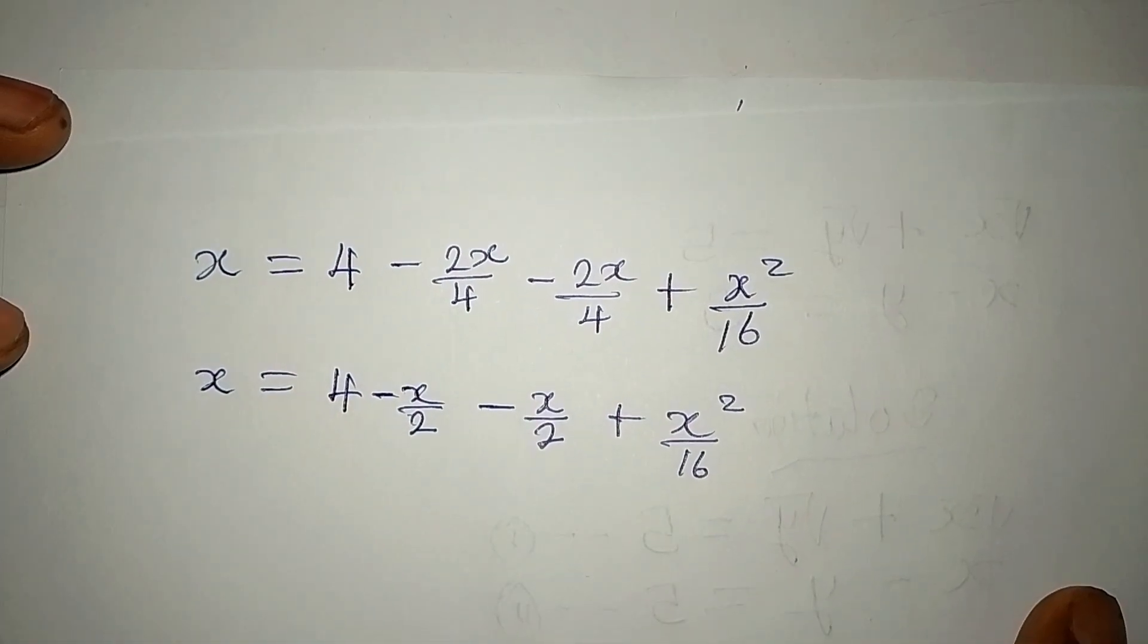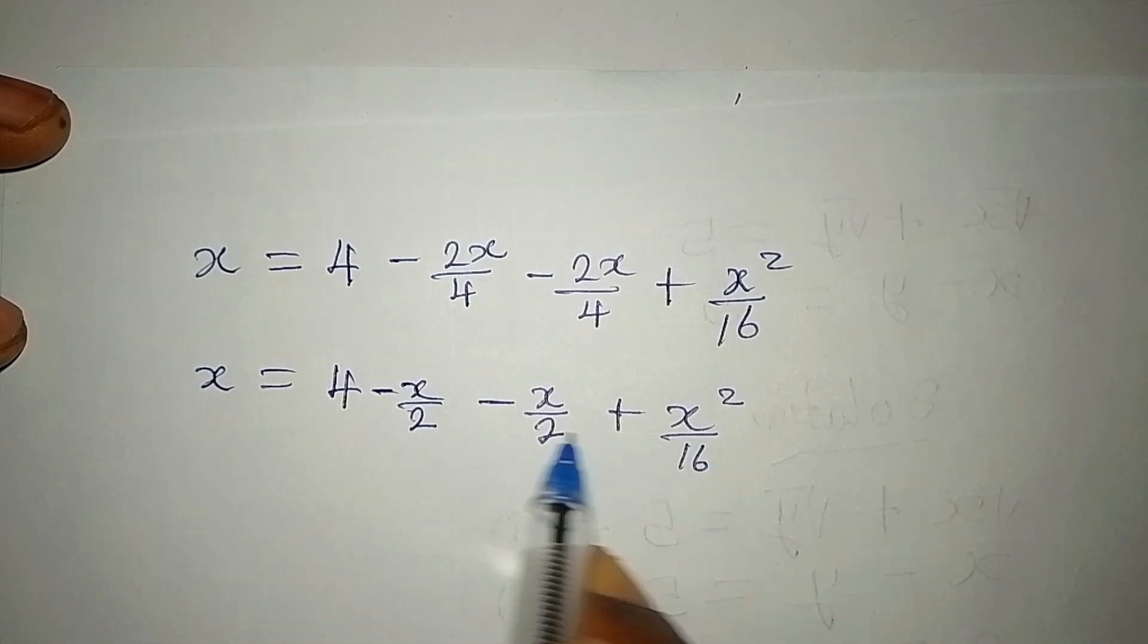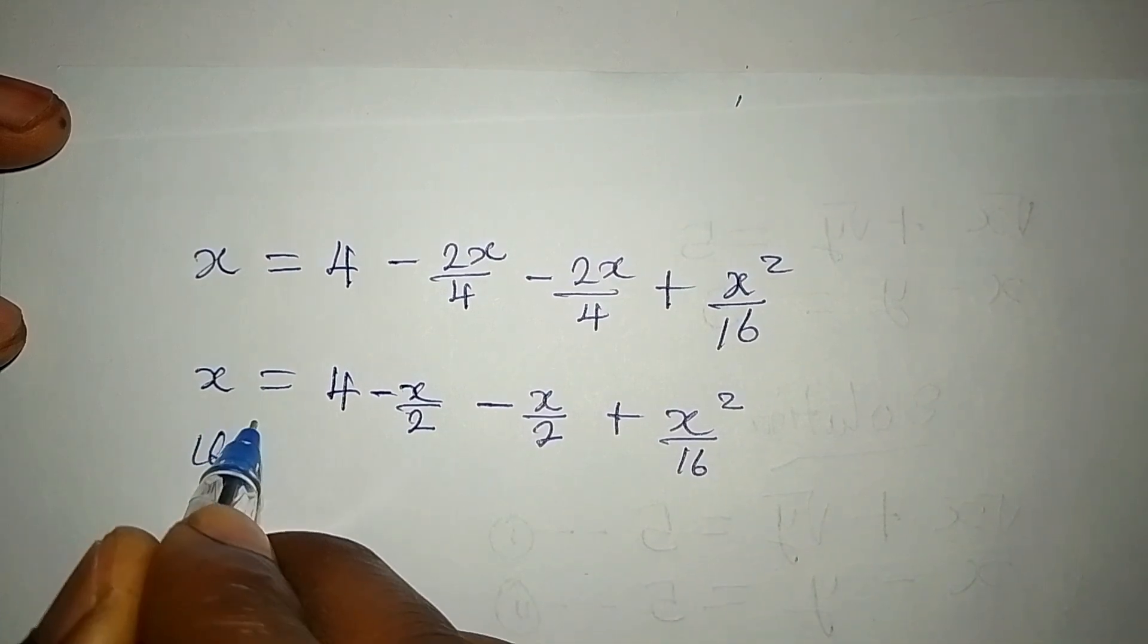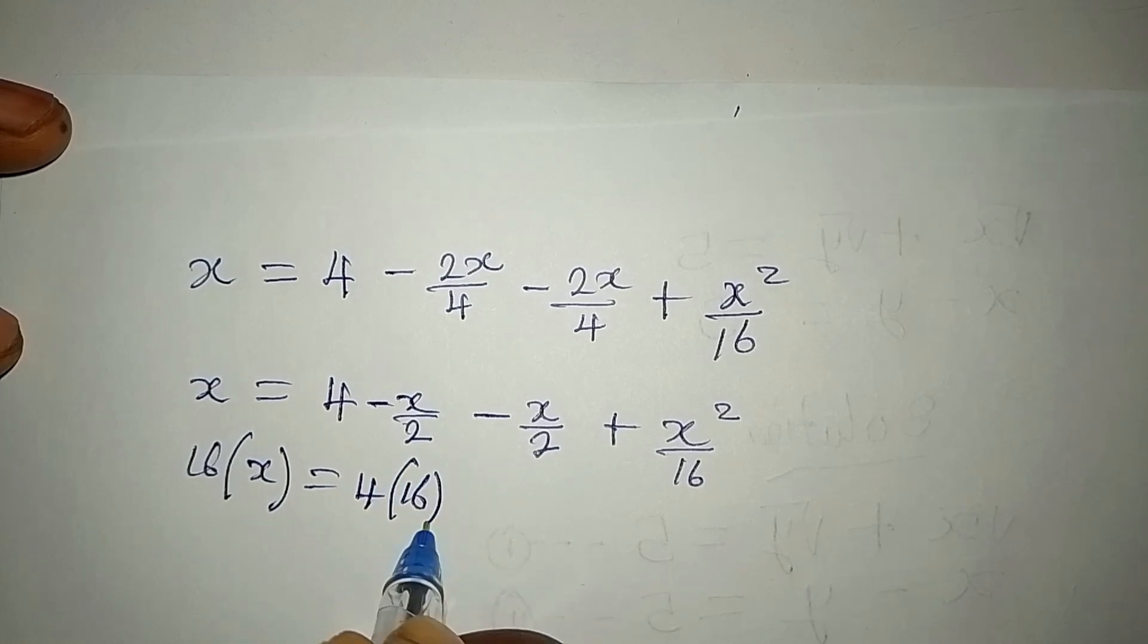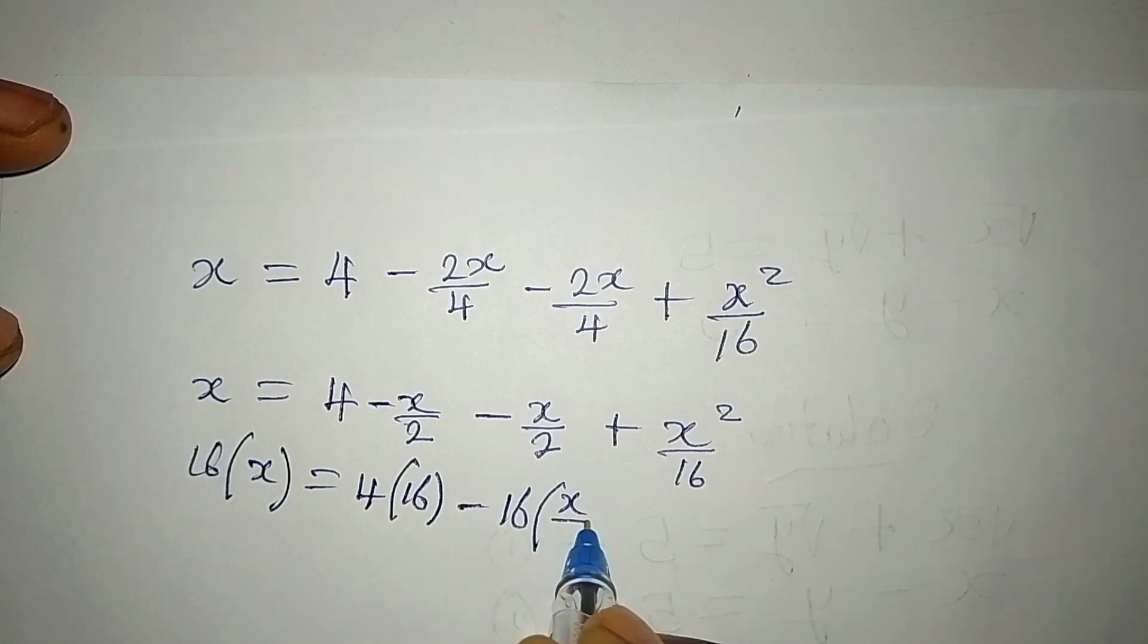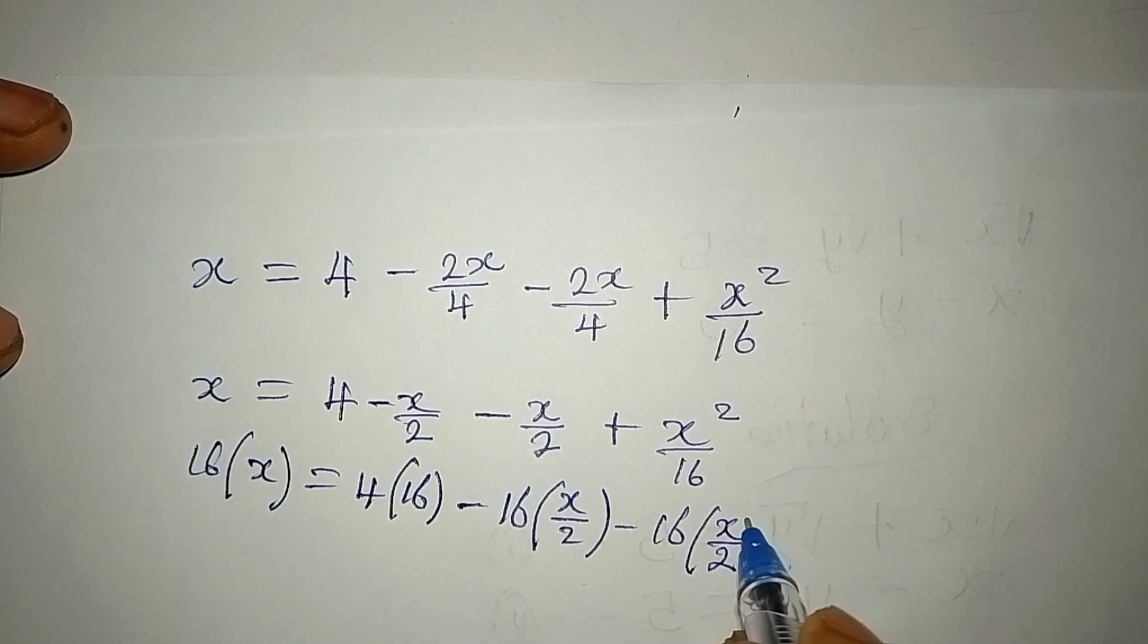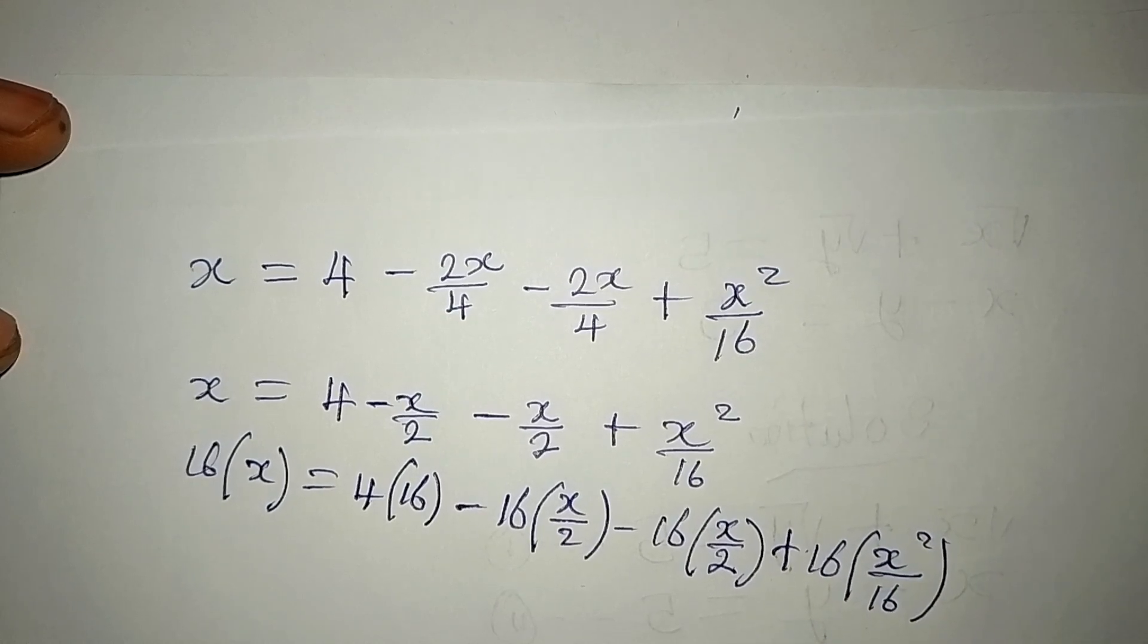Now what if I find the LCM of everything, which is 16. So we're going to have 16 multiplied by x equals 4 multiplied by 16. The LCM is multiplying everything, then minus 16 multiplied by x/2, then plus 16 multiplied by x²/16.